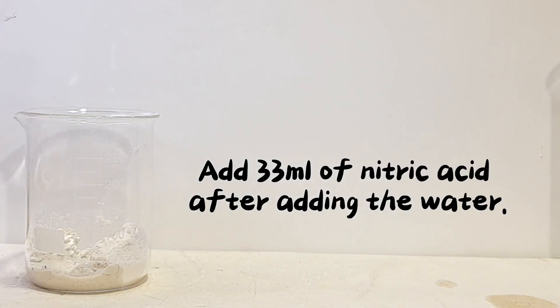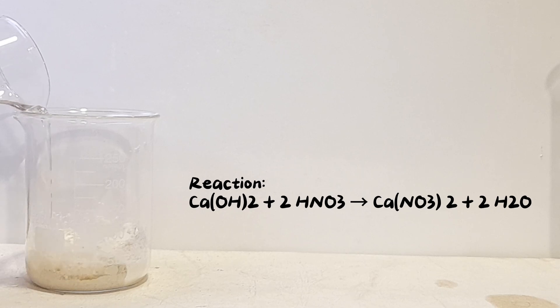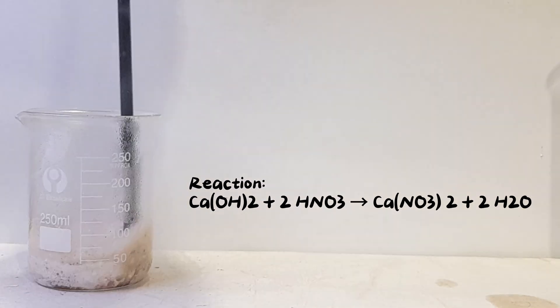Add 33 milliliters of nitric acid after adding the water. In this reaction, calcium hydroxide reacts with nitric acid to form calcium nitrate and water.